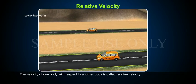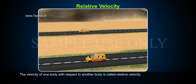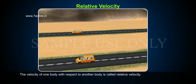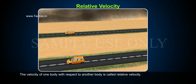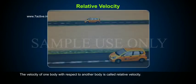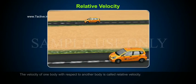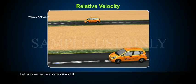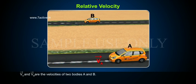The velocity of one body with respect to another body is called relative velocity. Let us consider two bodies, A and B. The relative velocity of A with respect to B is denoted by VAB bar.